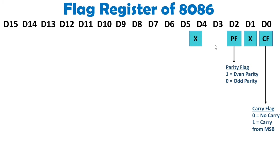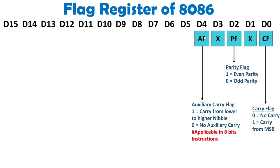D3 is don't care. D4 has the auxiliary carry flag. This auxiliary carry status flag is applicable in 8-bit instructions only, and it gives you information about nibble-to-nibble carry. Whenever a carry occurs from the lower nibble to the higher nibble, this bit gets set to 1. A nibble has a size of 4 bits, so this 8-bit value contains 2 nibbles. Lower-nibble to higher-nibble carry is auxiliary carry.